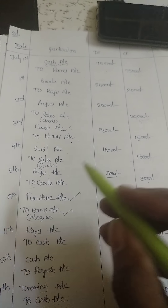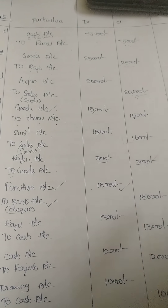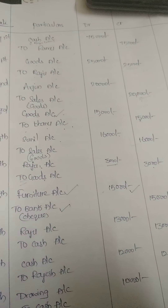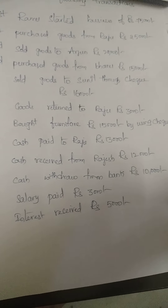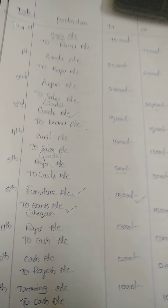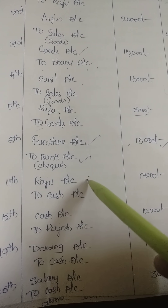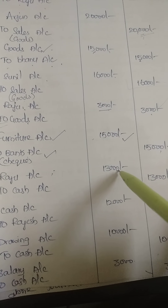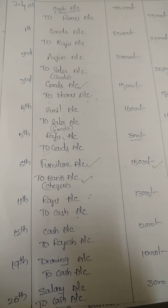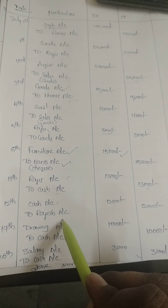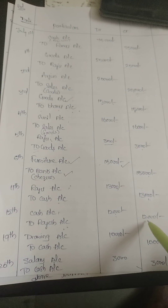When paying by check, we write To Bank Account because checks come from the bank. Cash paid to Raju 13,000 rupees — Raju is the receiver, so Raju Account 13,000 is debited. To Cash Account 13,000 on the credit side. Cash received from Rajesh 12,000 rupees — cash is being received, so Cash Account 12,000 is debited. Rajesh is the giver, so To Rajesh Account 12,000 on the credit side.